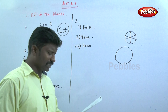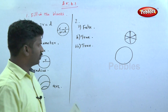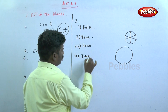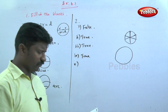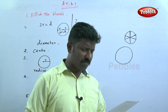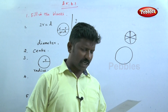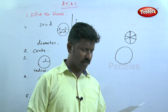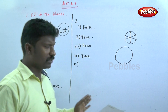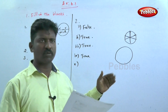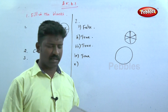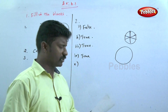The fifth one: sector is the region between the chord and its corresponding arc. This is a false statement. By definition, this is a contradiction — the fifth statement is false.